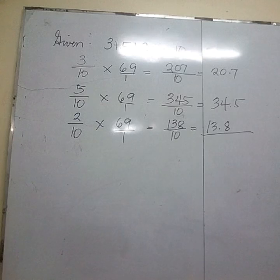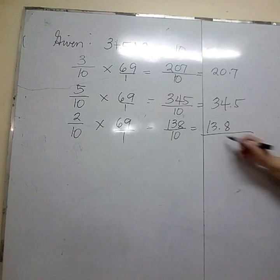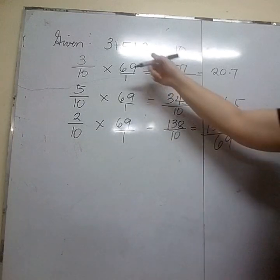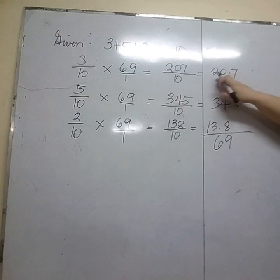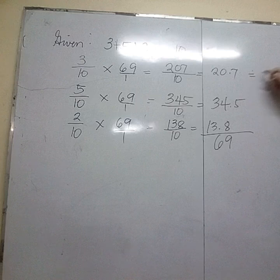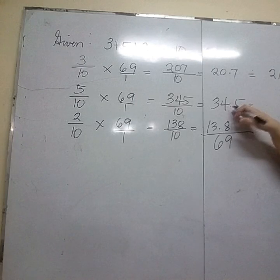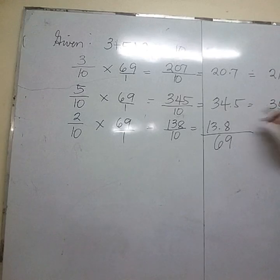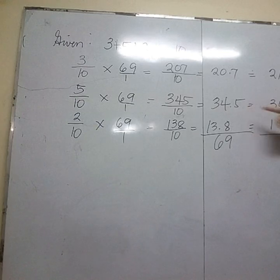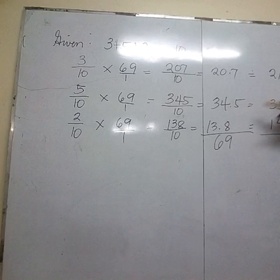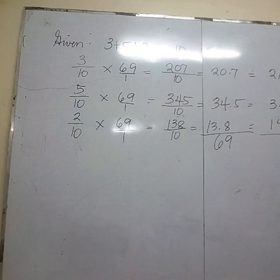What is the total? The sum is 69. But since we are talking about people, we need to round. 20.7 rounds up to 21. 34.5 rounds up to 35. And 13.8 rounds to 14. But 21 + 35 + 14 = 70, which is one more than 69. So we reduce the middle value by one — it becomes 34 — to keep the total at 69.